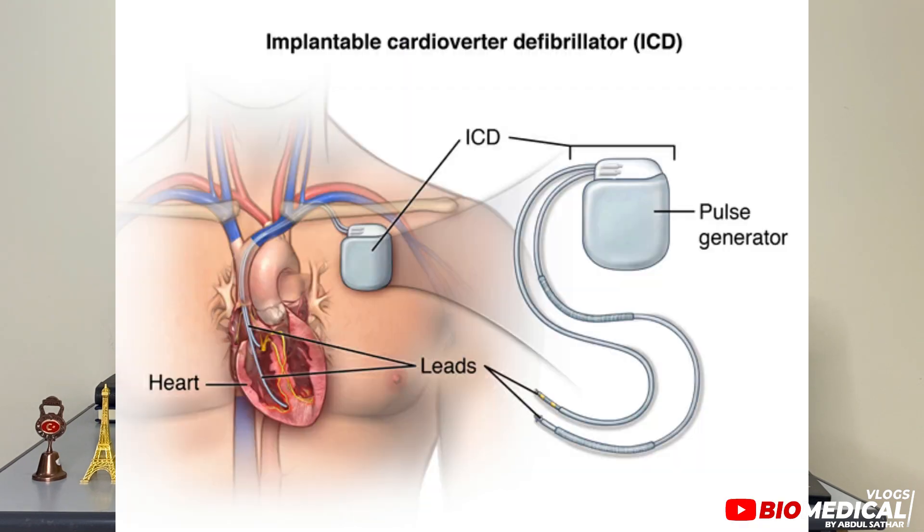ICDs often have pacemakers built into them. Basically, pacemakers can only deliver low-level electrical pulses, whereas an ICD can deliver both low-level and high-level electrical pulses. An ICD also has the ability to detect more life-threatening arrhythmias and deliver a shock to bring the heart back to a normal rhythm.